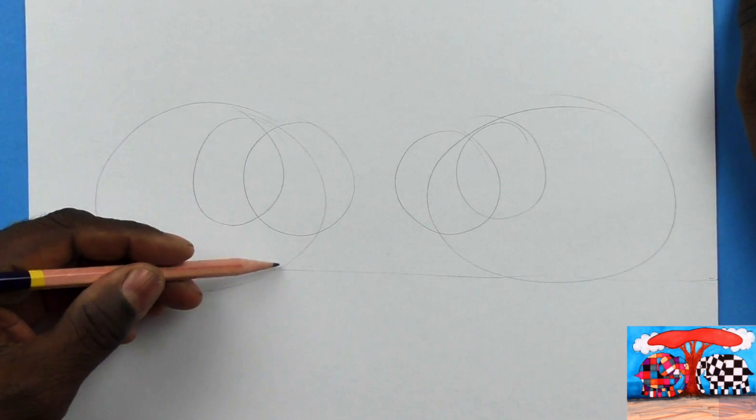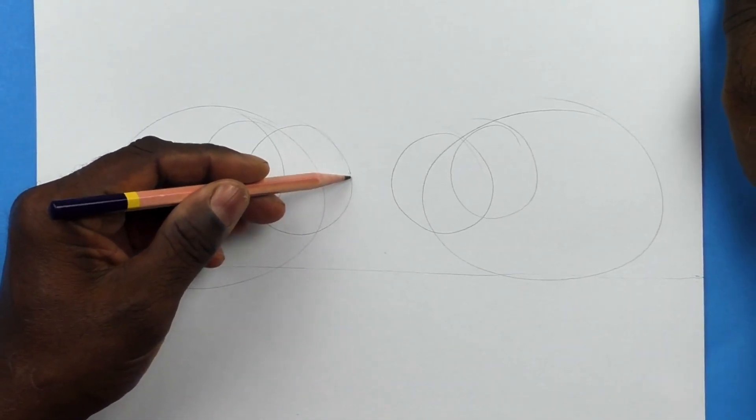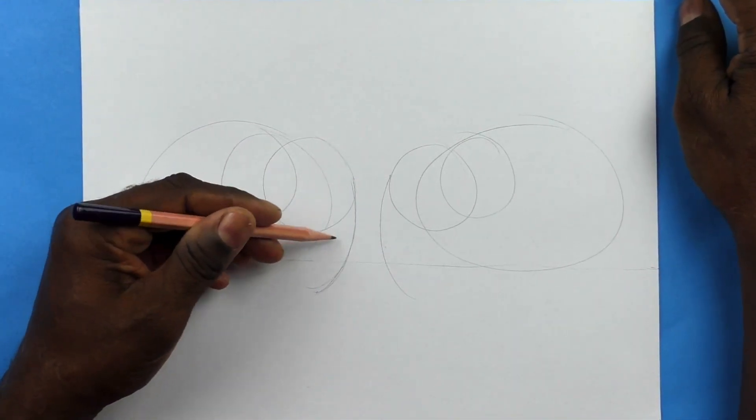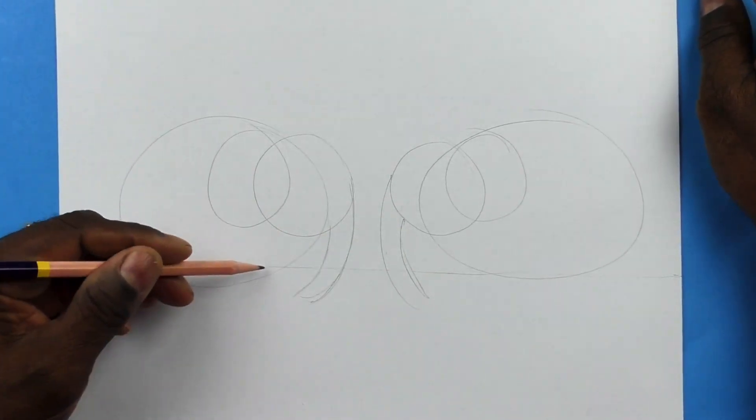Then we're going to make another circle for the ears and that's going to overlap the head. Now I'm going to make a J shape for their trunks. But it's too small so we must double it, so that we have two lines.